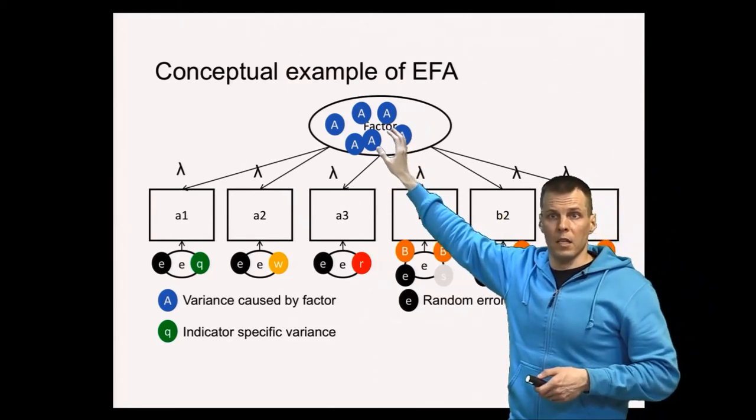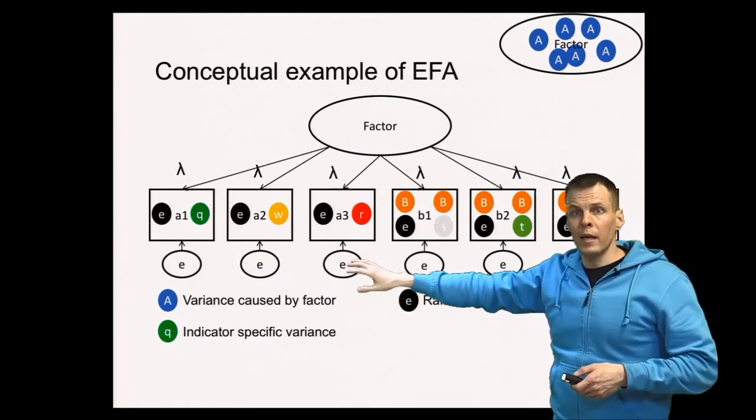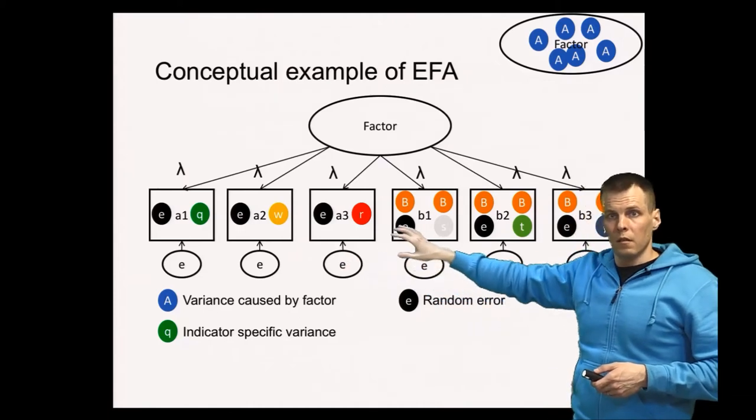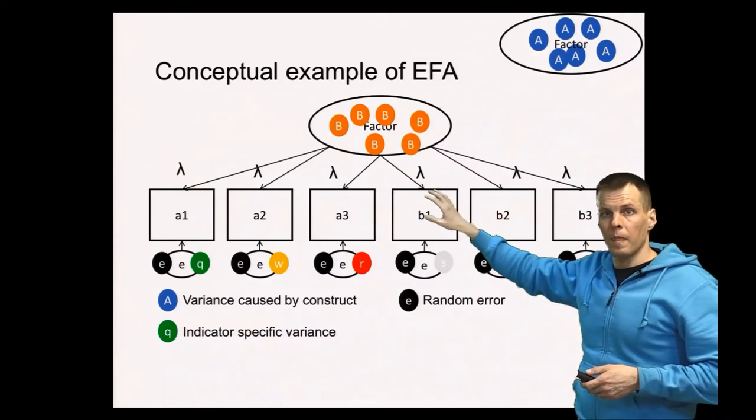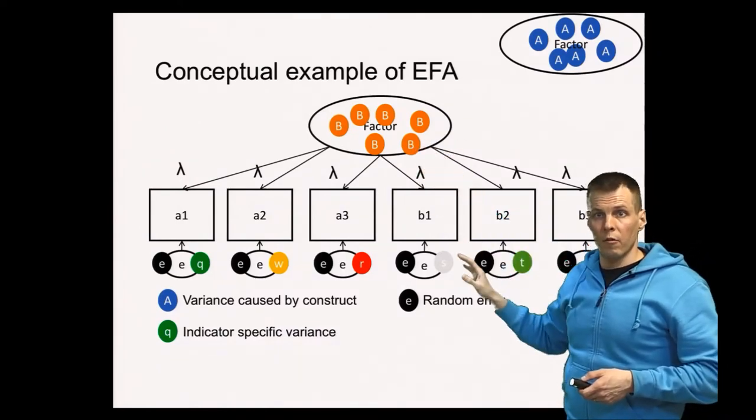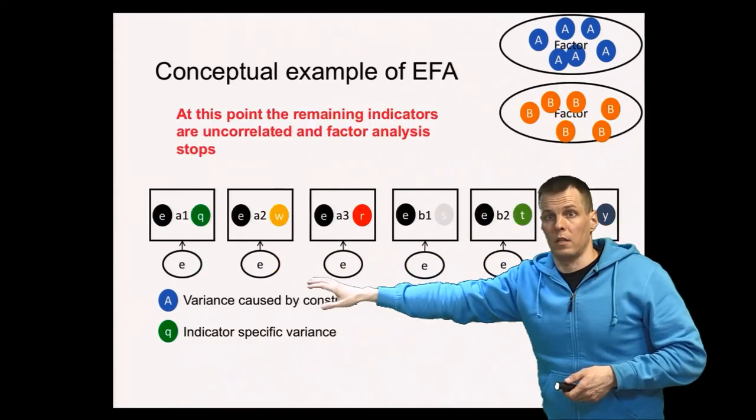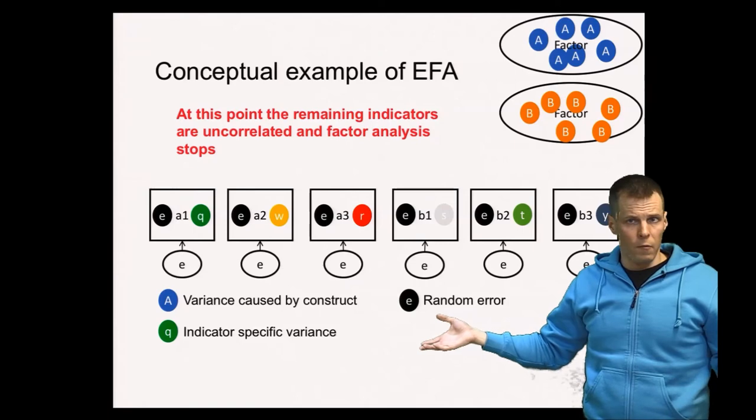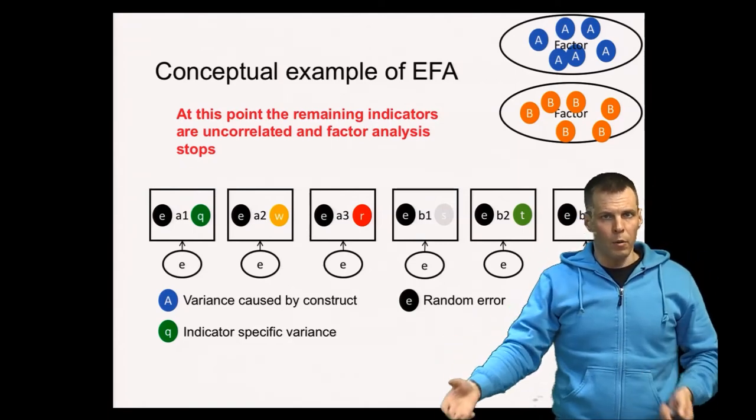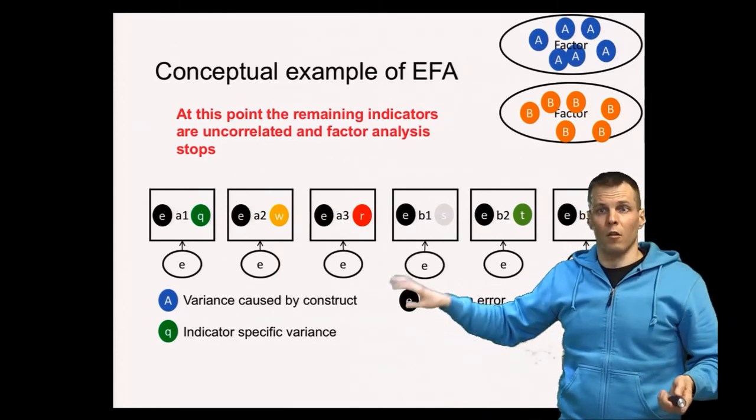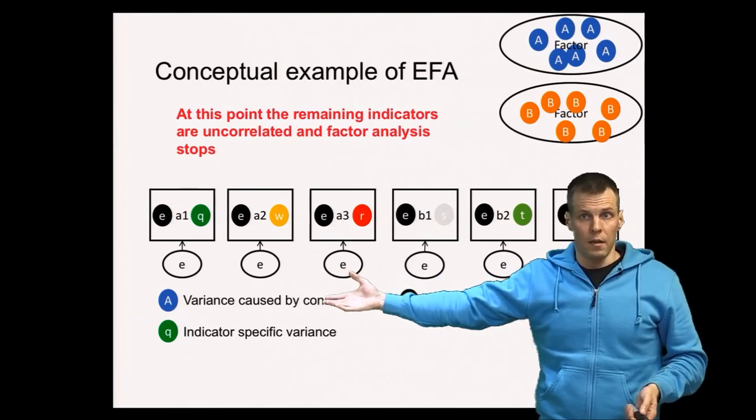So we take the A variance, we put it aside here, and then from the remaining data we fit another factor. It picks up the B variance here and the B variance here. And then the remaining indicators here are uncorrelated, in which case the factor analysis stops. So that's how factor analysis works: we pick up some variation, then we continue with the remaining, we pick up some variation until all the remaining indicators are uncorrelated.